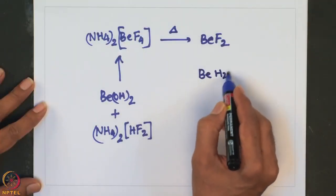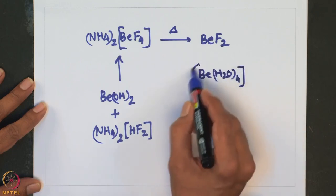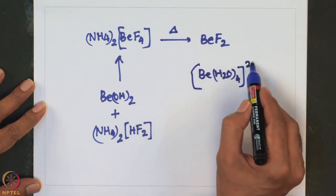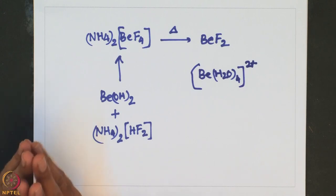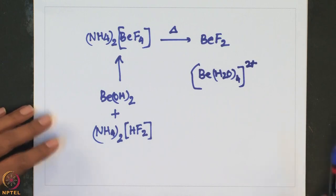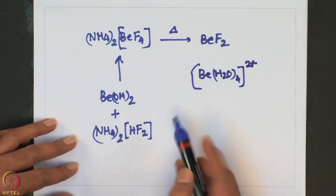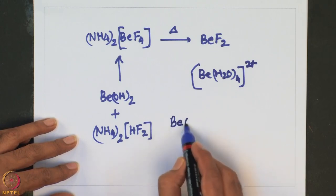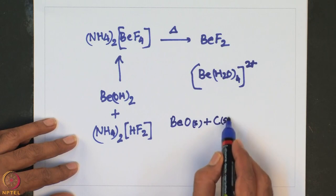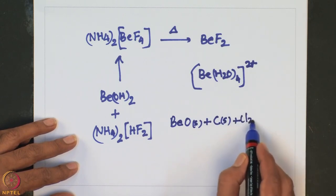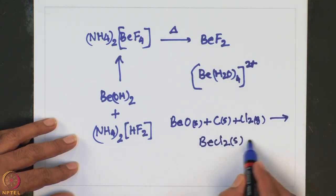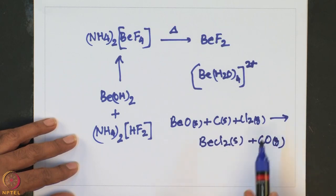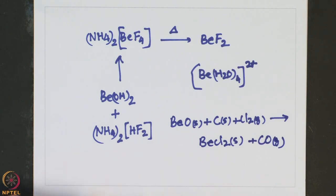When you take BeF2 and add water, it immediately forms a complex having four water molecules in its coordination sphere with tetrahedral geometry. Beryllium chloride can be made starting from beryllium oxide using carbon as a reducing agent: beryllium oxide plus carbon (coal) with chlorine gas leads to the formation of BeCl2. This is how one can conveniently prepare beryllium chloride.